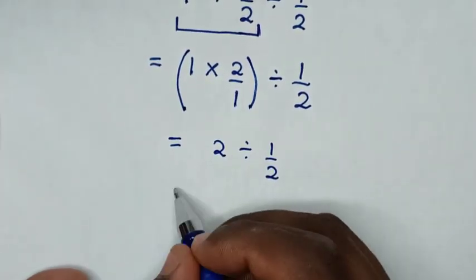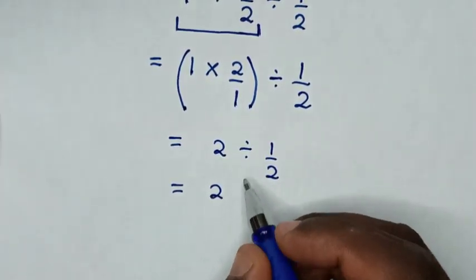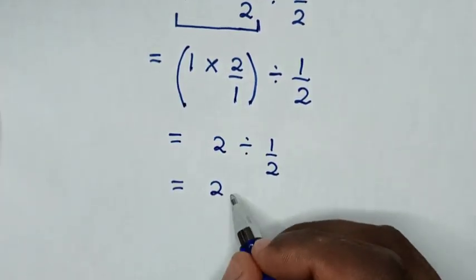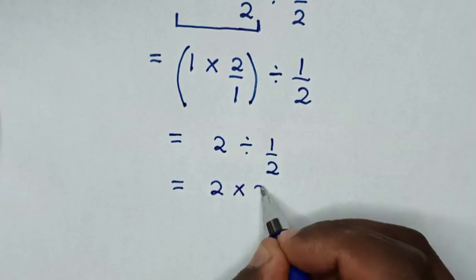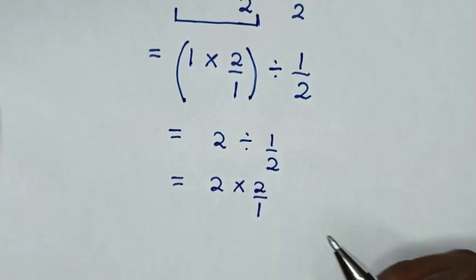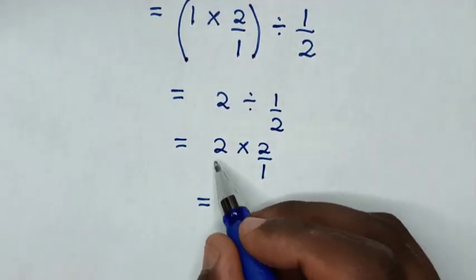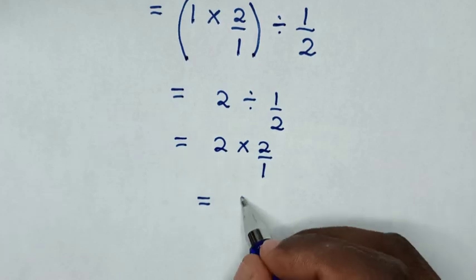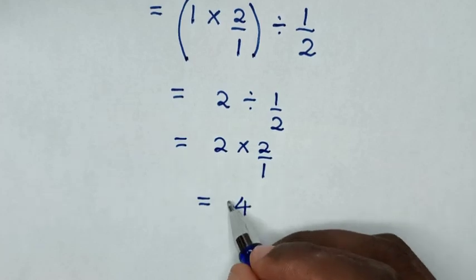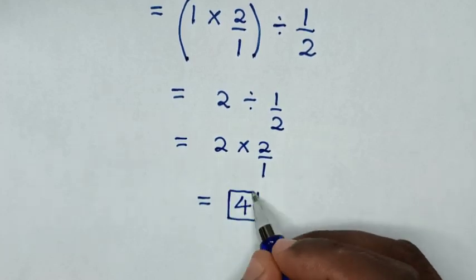In the next step, it will be equal to 2 divided by 1 over 2, which is the same as times 2 over 1. So it will be equal to 2 times 2, which is 4. So this is our final answer.